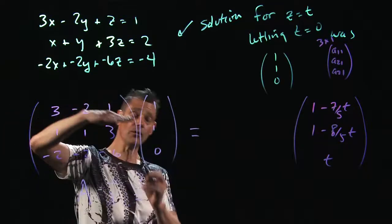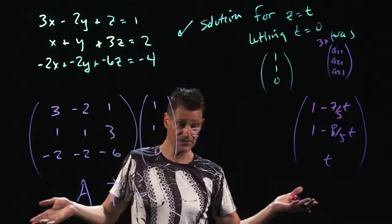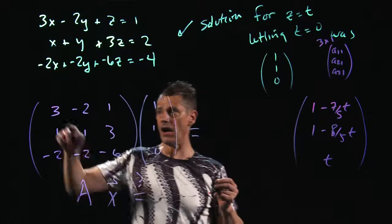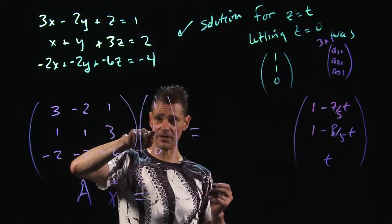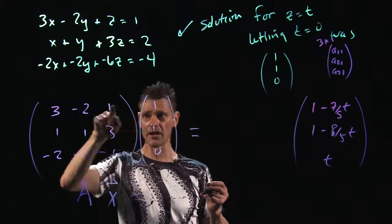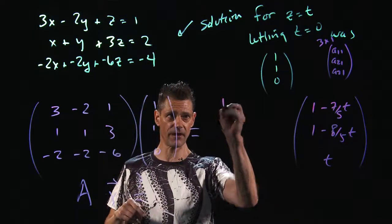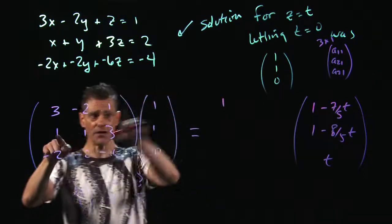This is the first row times the first column. That's the only column that there is. 3 times 1 is 3, plus -2 times 1 is -2. That is 1, and plus 1 times 0. So, this is, in fact, 1. 1 times 1, okay.